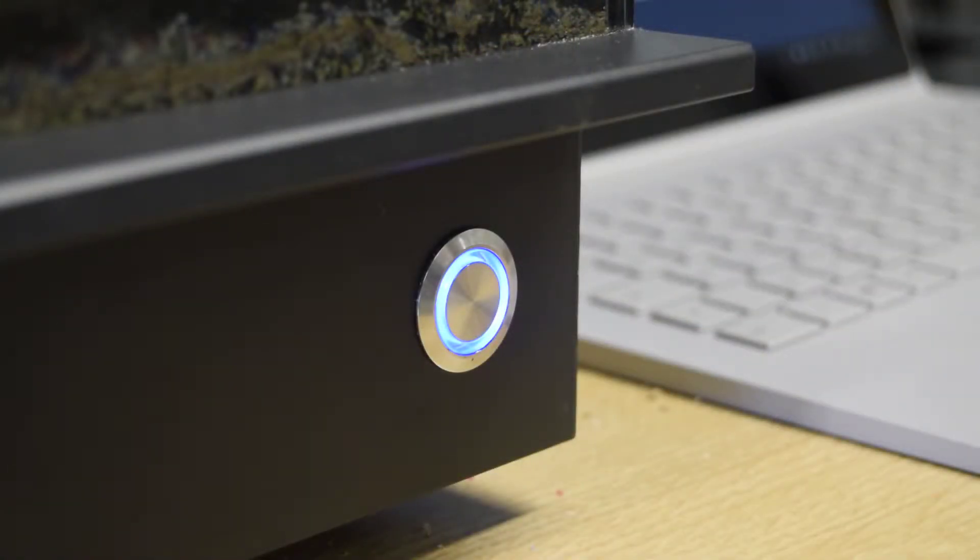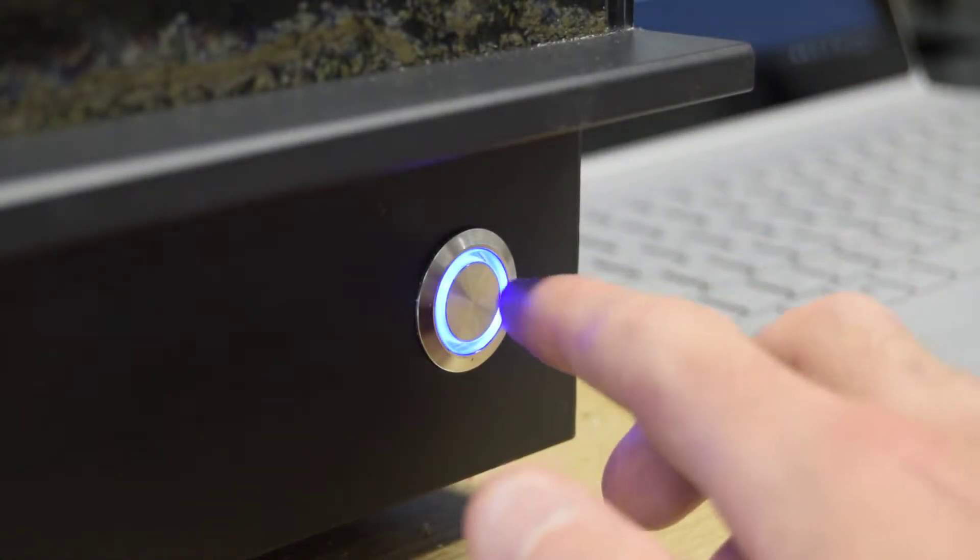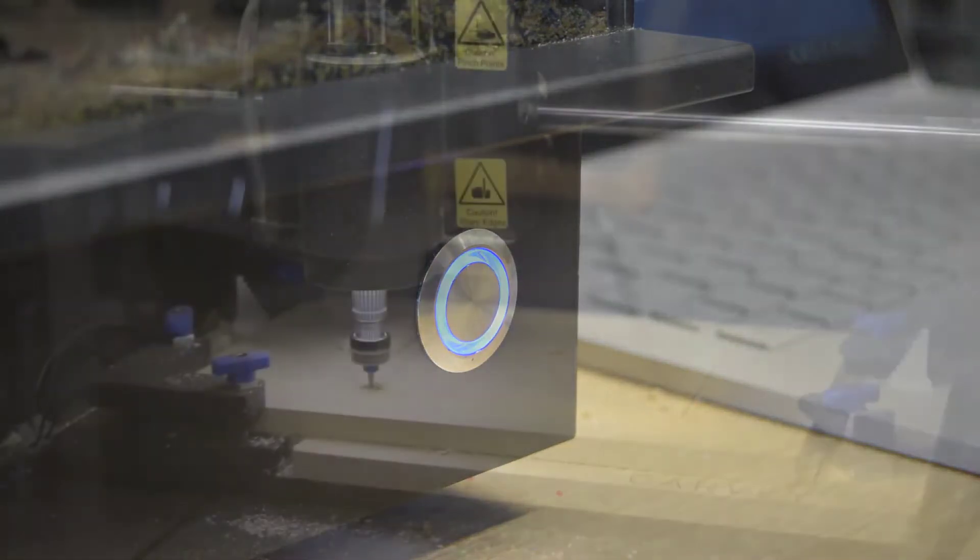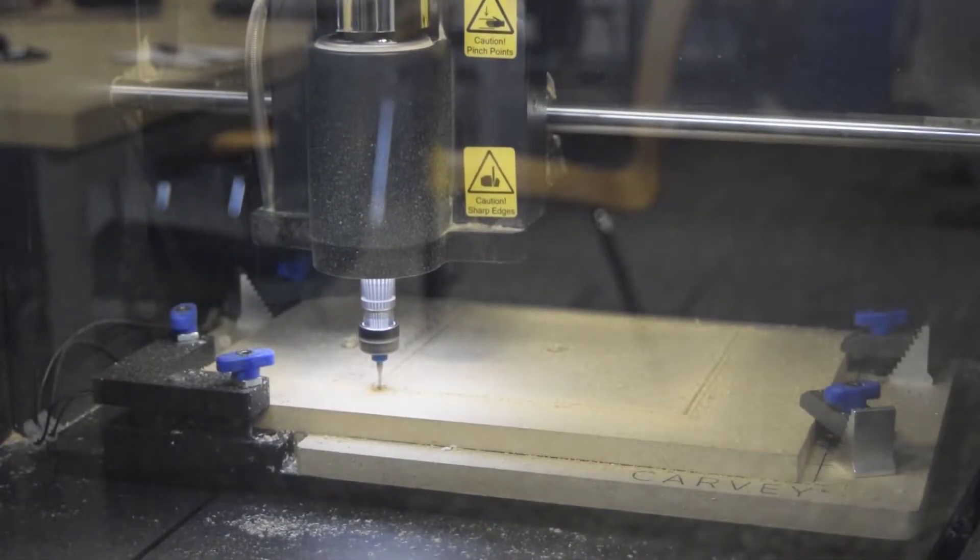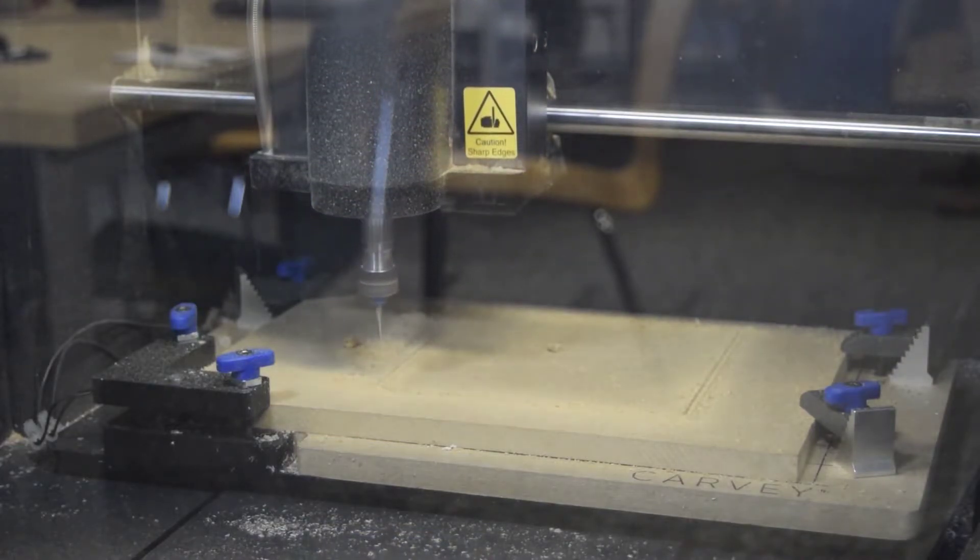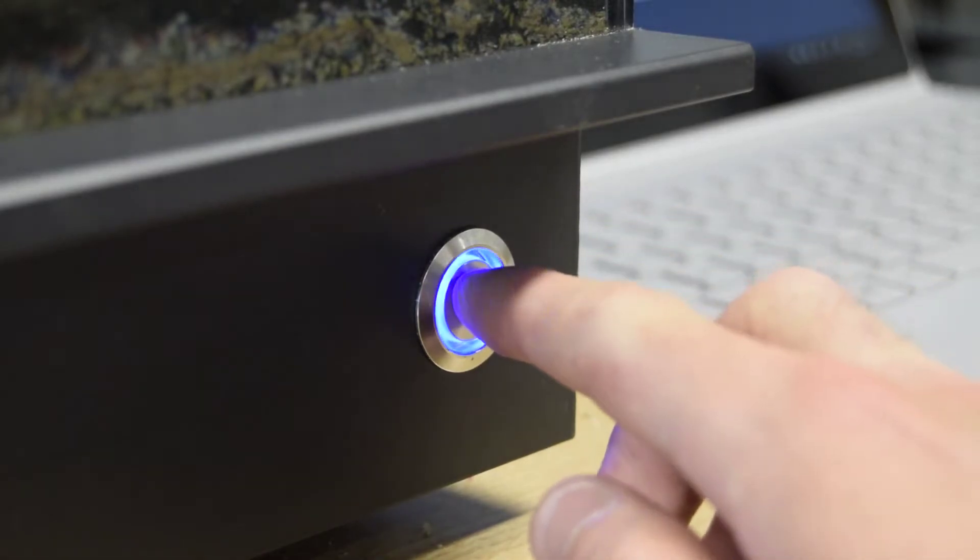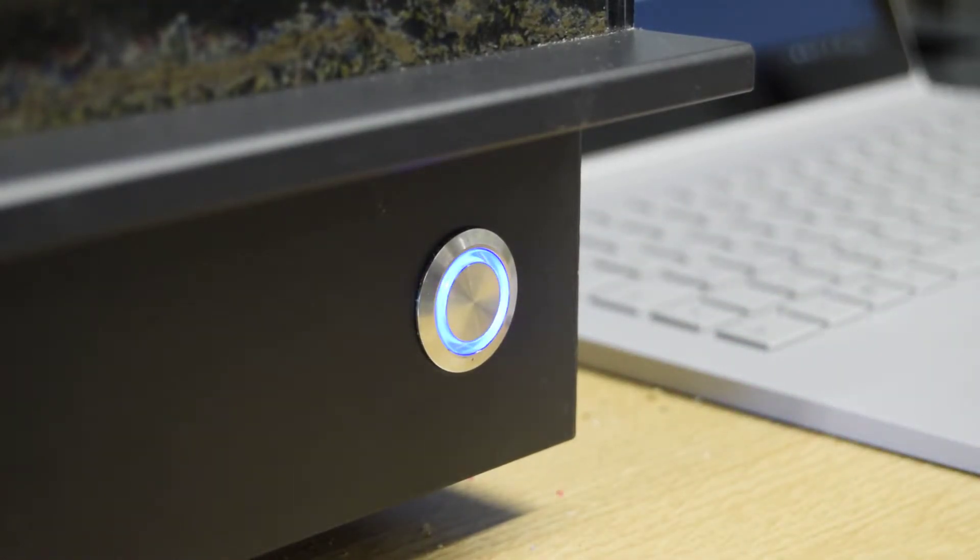If at any point you need to pause the carving process, press the blue button at the front of the machine. The drill will retract and the hood can be opened. The carve can be restarted by pressing the button once again.